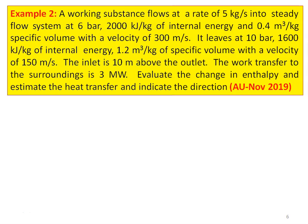Example number 2, from the Anna University question paper November 2019: A working substance flows at a rate of 5 kg/s into a steady flow system at 6 bar, with 200 kJ/kg internal energy, specific volume 0.4 m³/kg, and velocity 300 m/s. It leaves at 10 bar, 1600 kJ/kg internal energy, specific volume 1.2 m³/kg, and velocity 150 m/s. The inlet is 10 meters above the outlet. Work transfer to the surroundings is 3 MW. Find the change in enthalpy and estimate the heat transfer, indicating its direction.